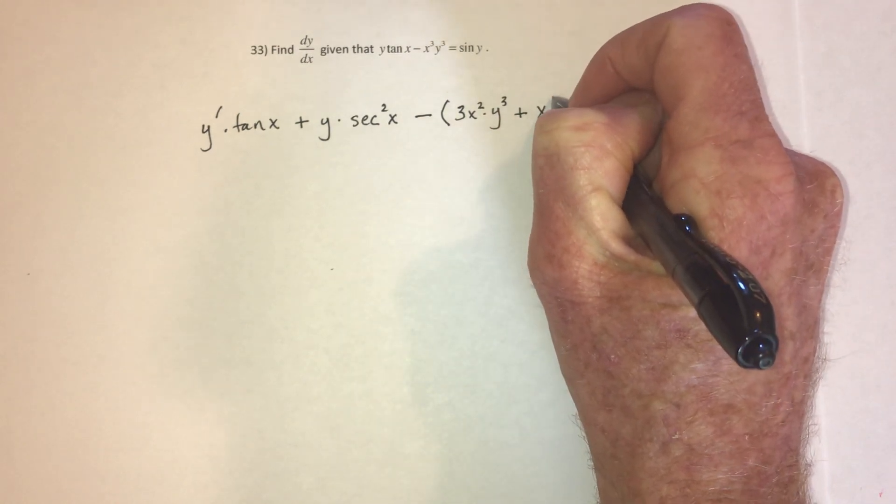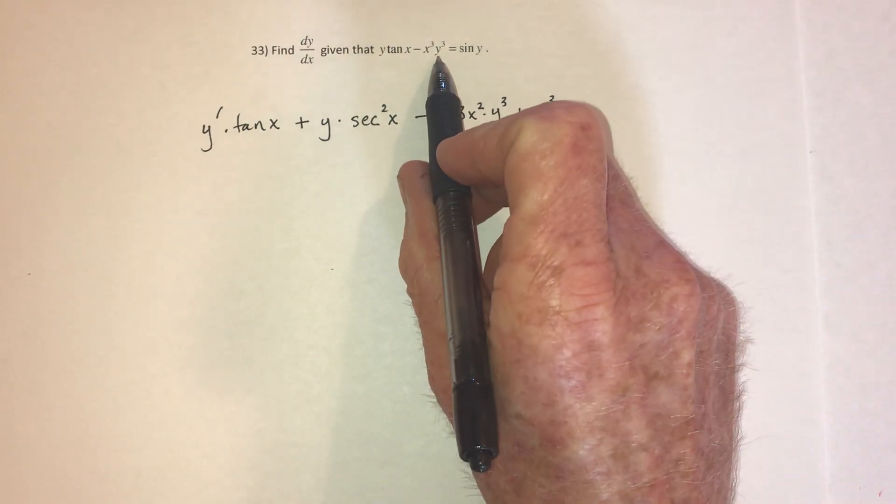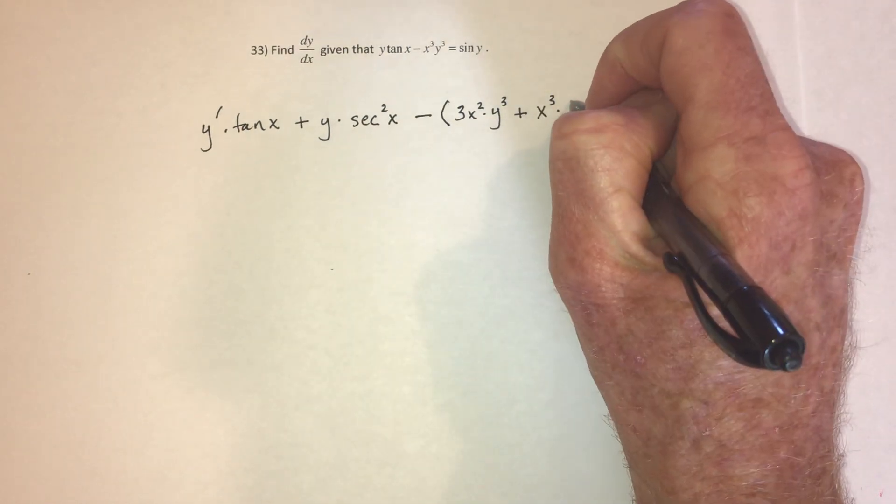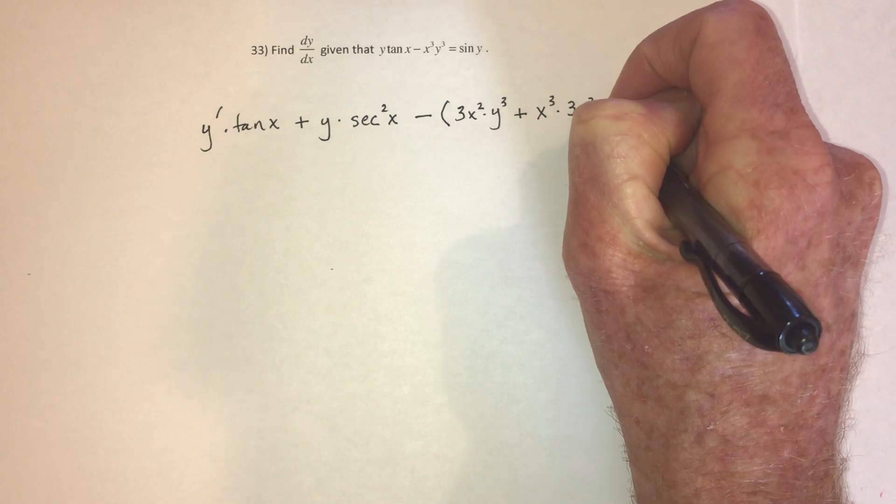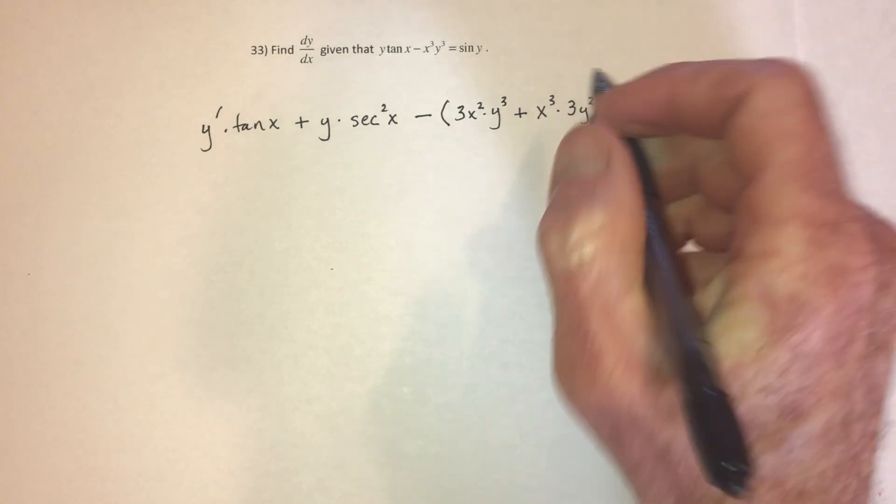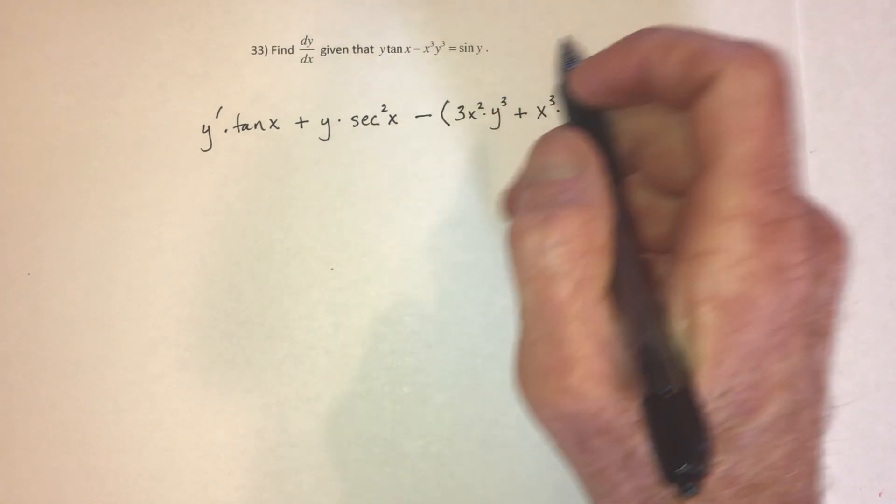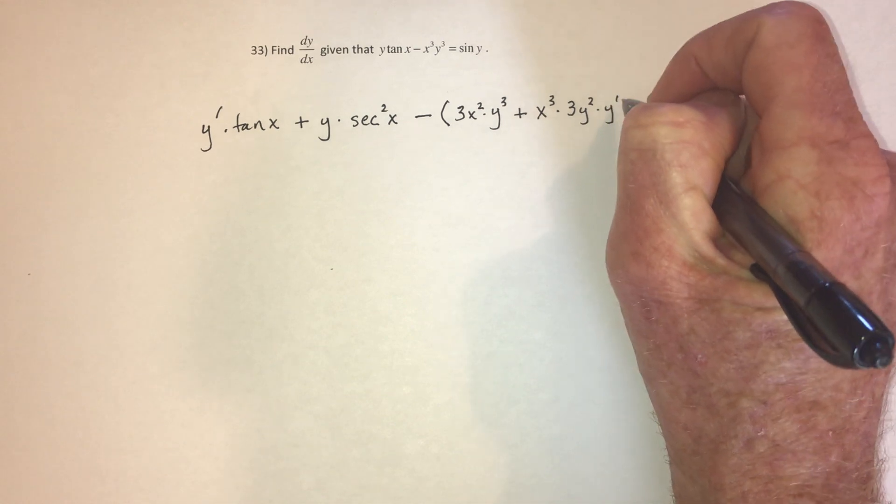leave x cubed alone and now take the derivative of the y cubed. So that's going to be 3y squared. And then you have to do the chain rule. Take the derivative of y. That's going to be y prime.